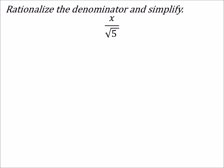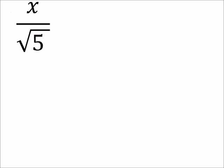So, here I've got x over the square root of 5. So, this is a square root, so I just need a pair of fives. Right?